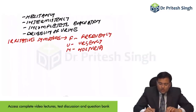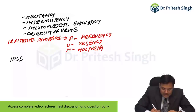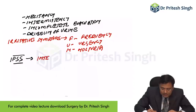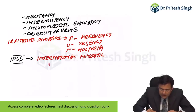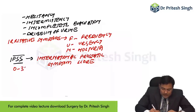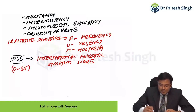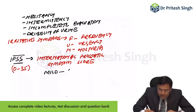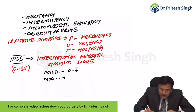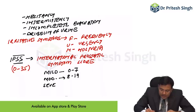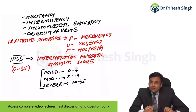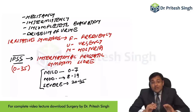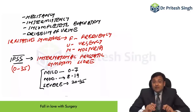In patients of BPH, we calculate the IPSS — International Prostatic Symptom Score. The score varies from 0 to 35. Mild symptoms: 0 to 7. Moderate symptoms: 8 to 19. Severe symptoms: 20 to 35. Remember there is no correlation between size of prostate and severity of symptoms.